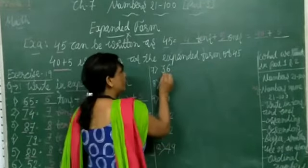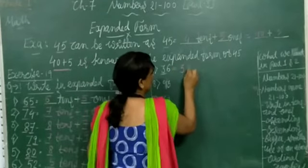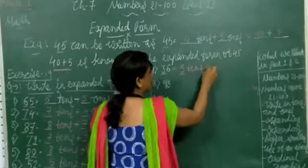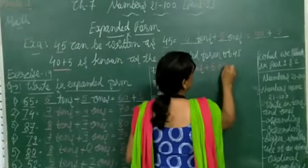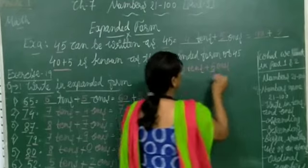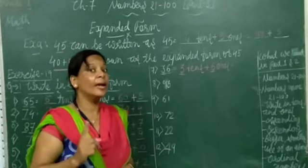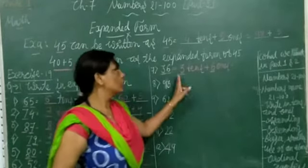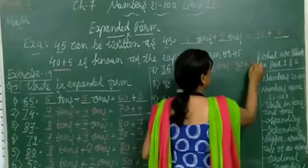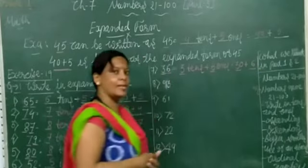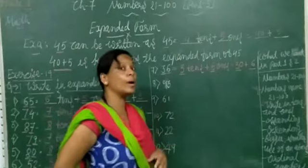Now number 36 — in 36, how many 10s? 3 10s. Plus how many 1s? 6 1s. Always remember: 1 10 equals 10, so 3 10s equals 30. Write 30 plus 6 1s — 30 plus 6 is equal to 36. So 30 plus 6 is the expanded form of 36.